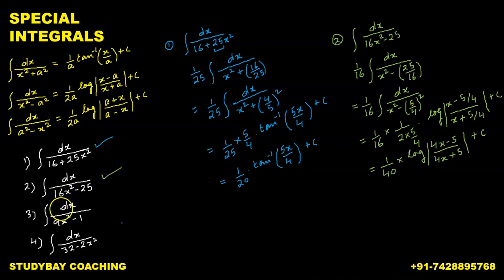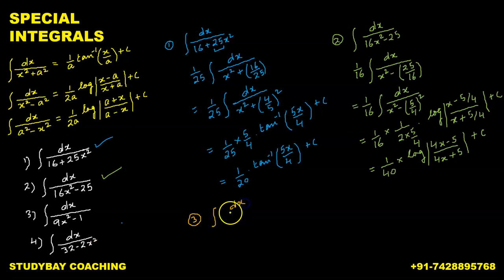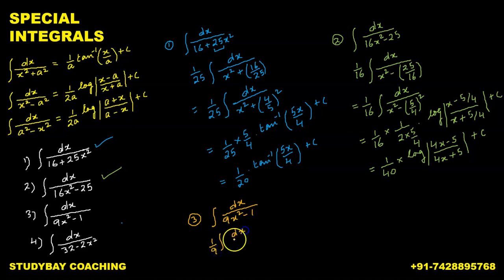Moving on to the third problem: integral of dx upon 9x² minus 1. We divide numerator and denominator by 9 to get 1 upon 9 times the integral of dx upon x² minus 1 upon 9. We can write 1/9 as (1/3)², so this becomes 1 upon 9 times the integral of dx upon x² minus (1/3)².